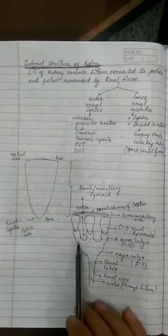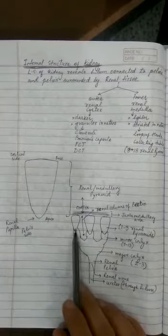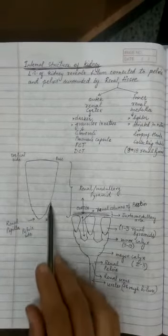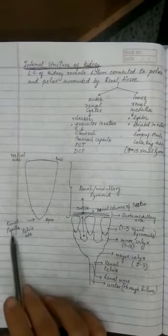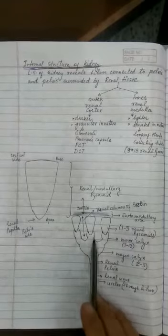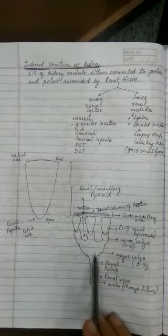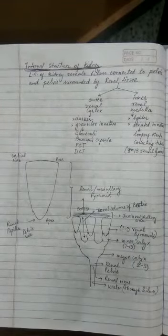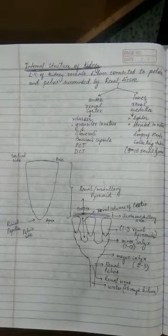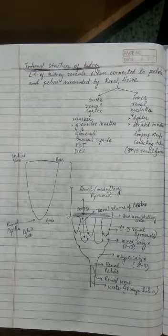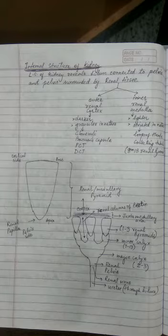There are calyces, cup-like structures which receive the urine or the tips of the pyramids also called papillae. Minor calyces join to form a bigger calyces called major calyces, and from there the urine passes out into the renal pelvis and then into the ureters.